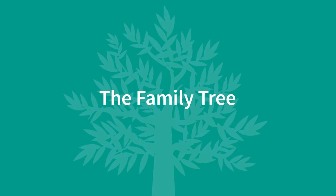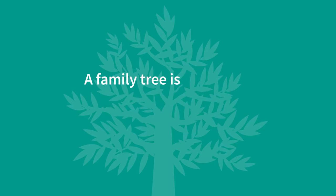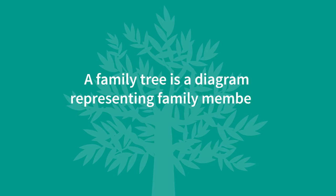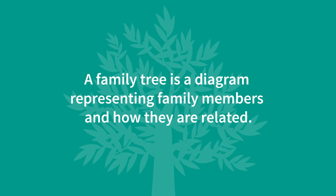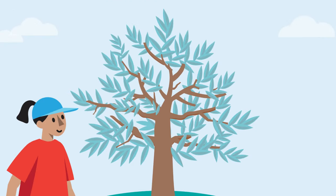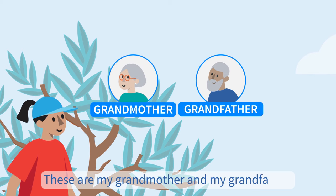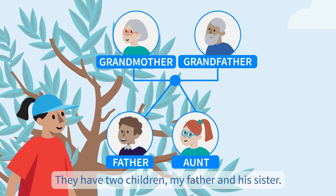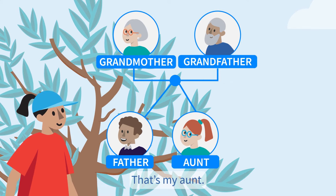A family tree is a diagram representing family members and how they are related. These are my grandmother and my grandfather. They have two children, my father and his sister. That's my aunt.